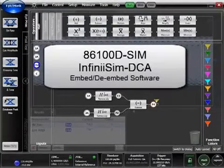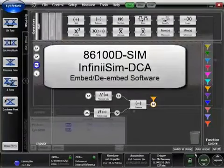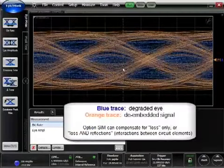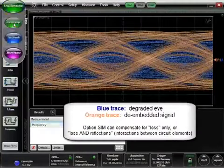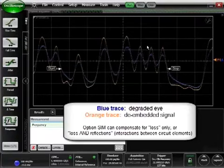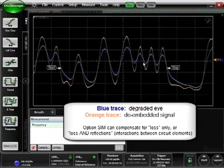InfiniSIM DCA is embedding and de-embedding software for Flex DCA. It's easy to configure Flex DCA to remove or de-embed the effects of a fixture or cable and open the eye to improve measurement margins.